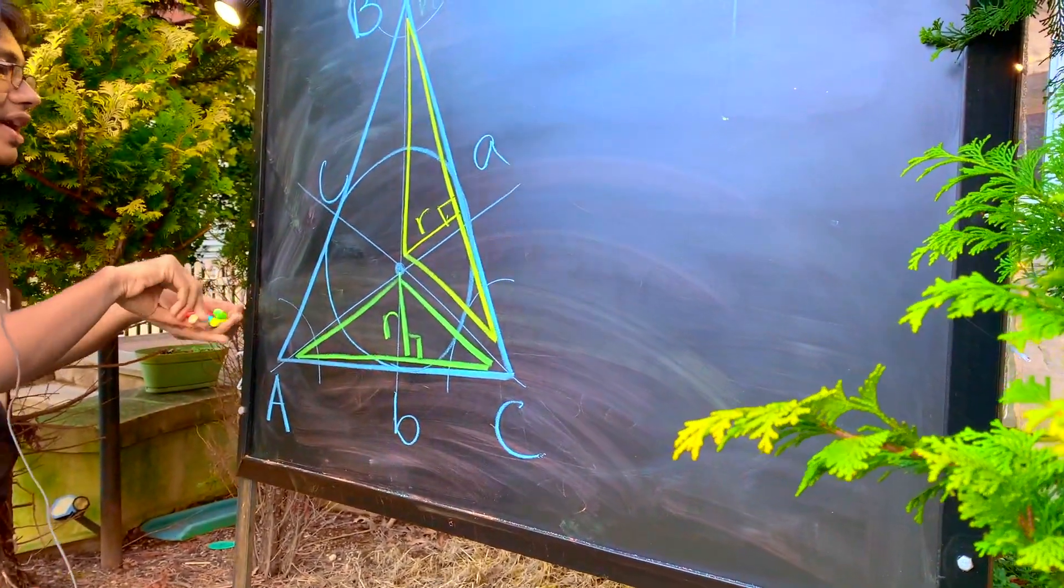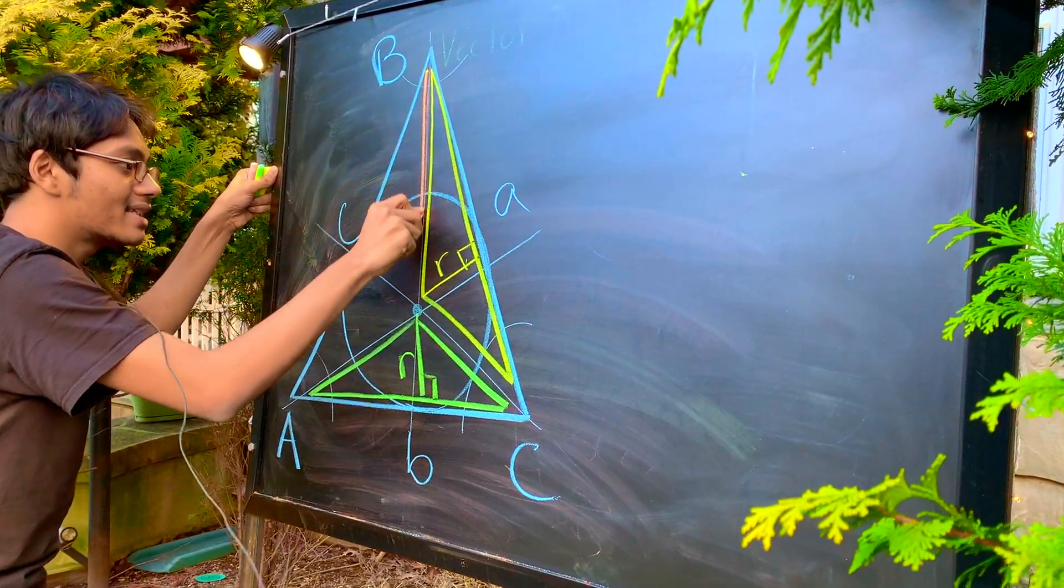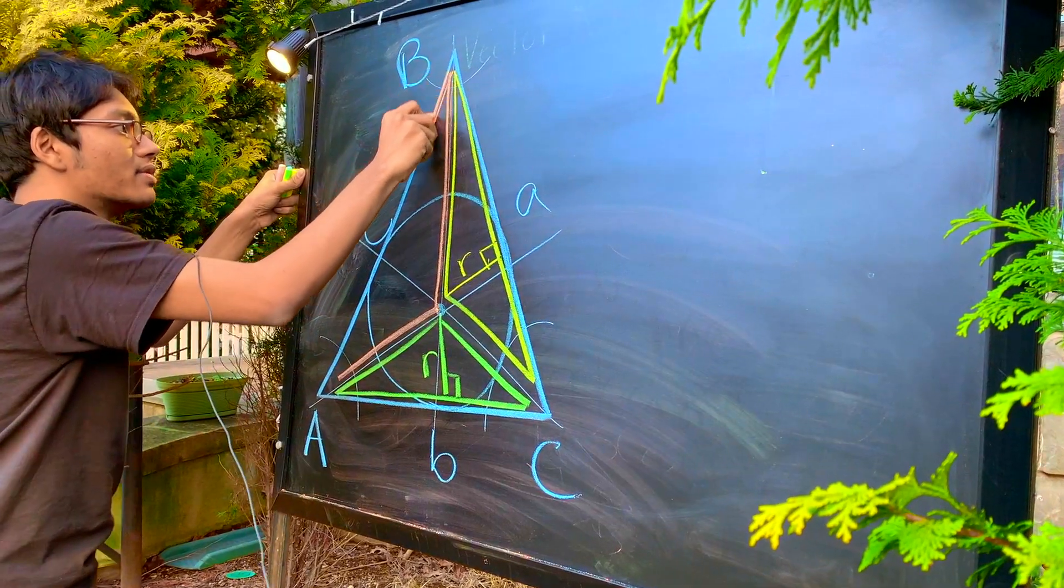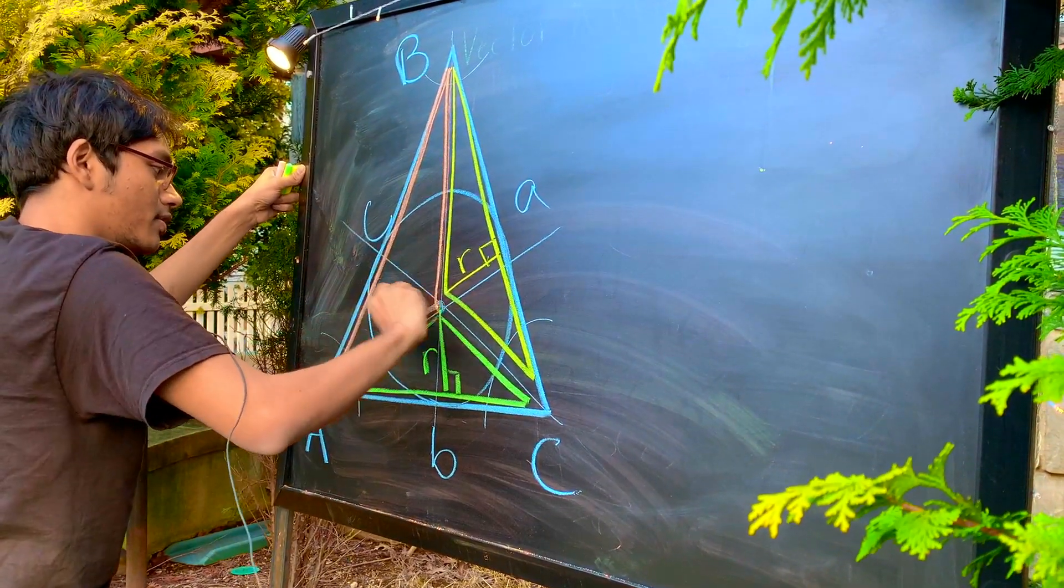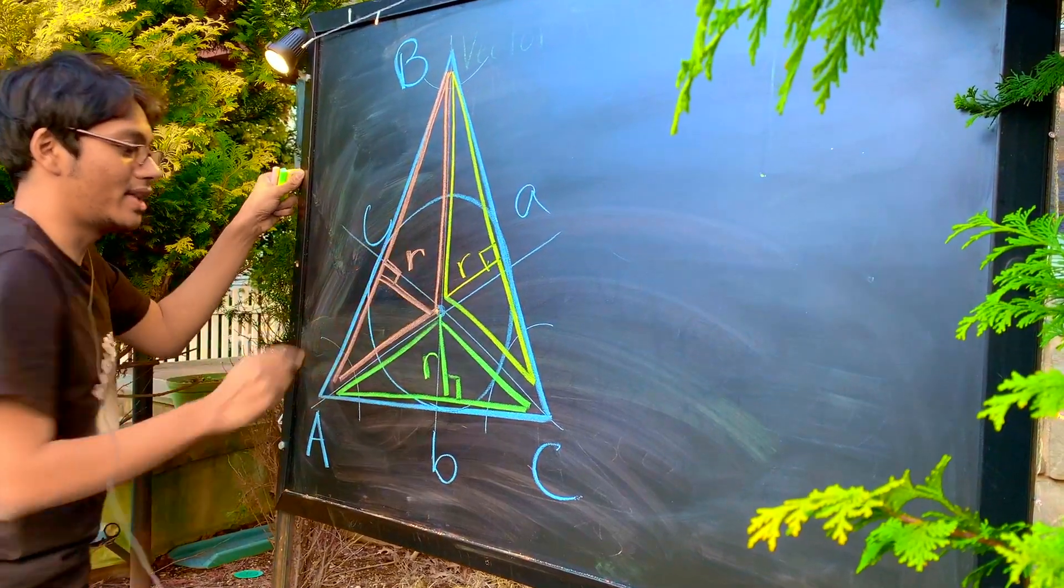let's take a look at our final triangle. And that's this kind of orange triangle. And this orange triangle, if you could guess by now, also has an altitude. And that altitude has a length of the in-radius.